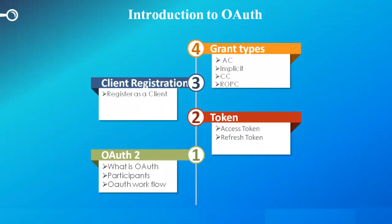We now know the basic OAuth flow. Let's move on to the OAuth grant types. Though there are different grant types available in the OAuth framework, one has to decide which type suits best for your application. You also have to keep in mind that the actual OAuth high-level flow will differ depending upon different grant types, but the core flow will remain the same. The main four types are: authorization code grant, implicit grant, client credential grant, and resource owner password credential grant. Let's analyze each of these grants in detail.